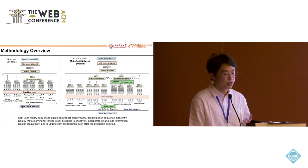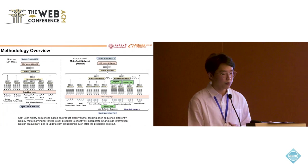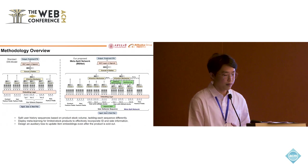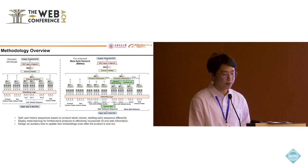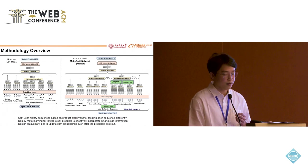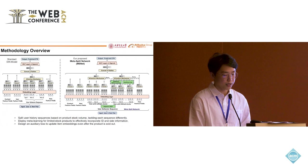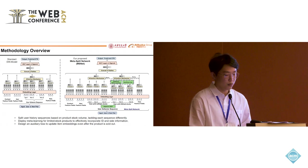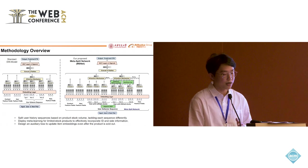To address these challenges in C2C platforms, we propose the MetaSplit Network or MSNet. First, it splits the user history sequence based on product stock volume, employing distinct model approaches for each sequence. For limited stock products, a meta-learning approach is applied to address the problem of non-convergence, achieved by designing the meta-scaling and shifting network with ID and side information. In addition, we propose an auxiliary loss that keeps item embeddings updateable even when the product is consumed and sold out.